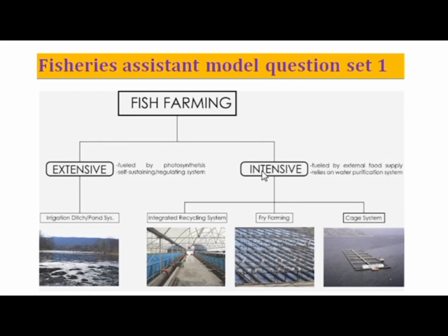We are going to discuss extensive culture — traditional culture practices. For example, we have fish in natural water bodies. The stocking density is low. We do not need to feed the fish artificially; they feed on natural food available in the water. It uses a polyculture system in the pond, with no intensive management required — no supplemental food, no water quality analysis. We can simply harvest them. In extensive farming, fish depend entirely on natural feed.